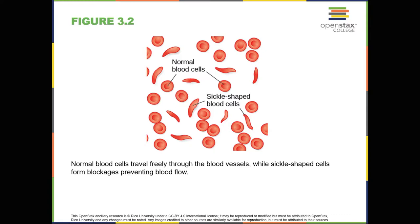While the notion of survival of the fittest may suggest that people suffering from this disease have a low survival rate, and therefore the disease will become less common, this is not the case. Despite the negative evolutionary effects associated with this genetic mutation, the sickle cell gene remains relatively common among people of African descent. Why is this? The explanation is illustrated with the following scenario.